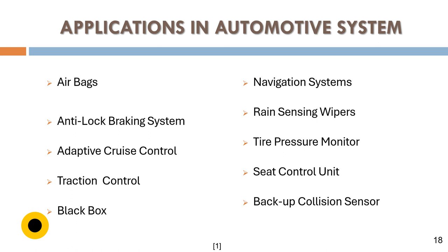Some of the applications of Automotive Embedded Systems include airbags and anti-lock braking system, adaptive cruise control, traction control, black box (EDR), navigation systems, rain sensing wipers, tire pressure monitor, seat control unit, and backup/parking sensors.